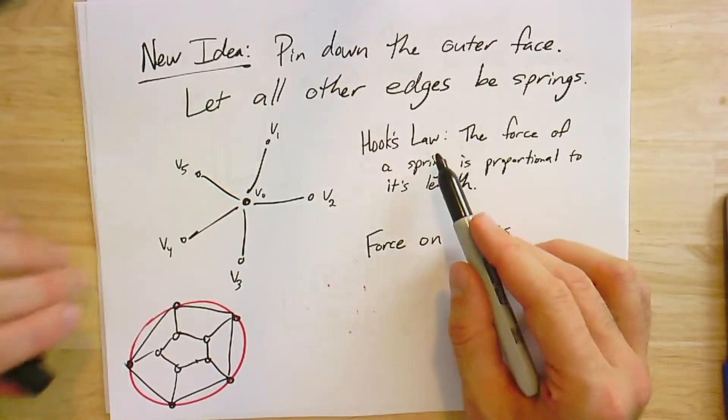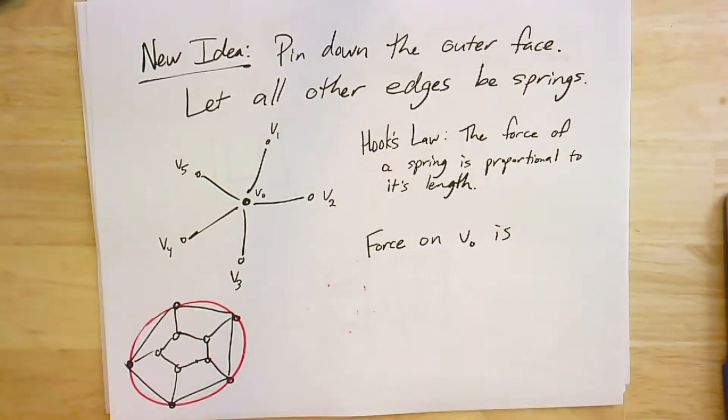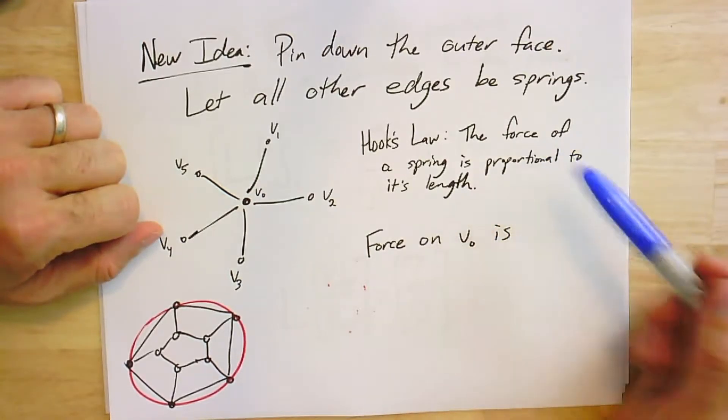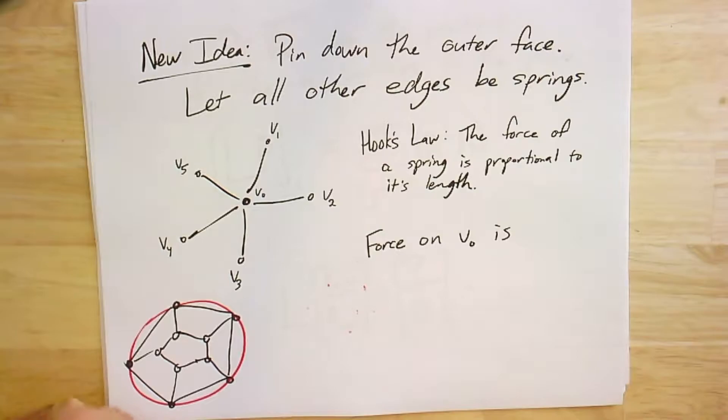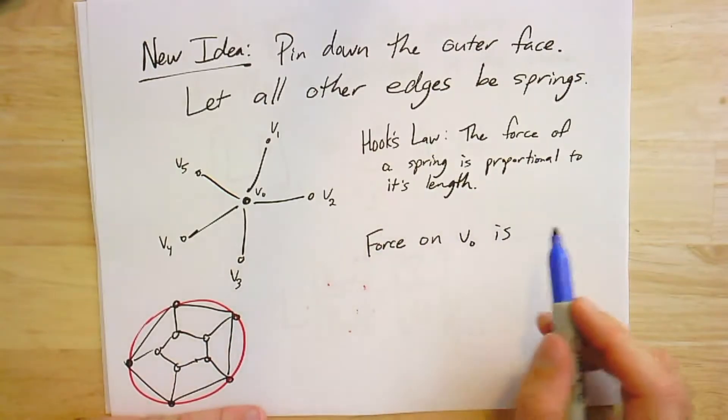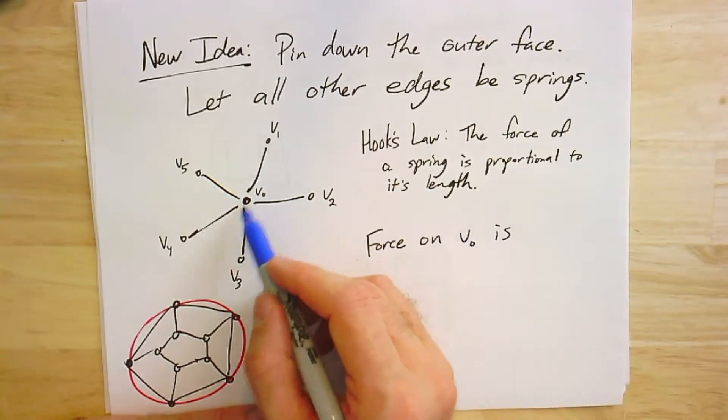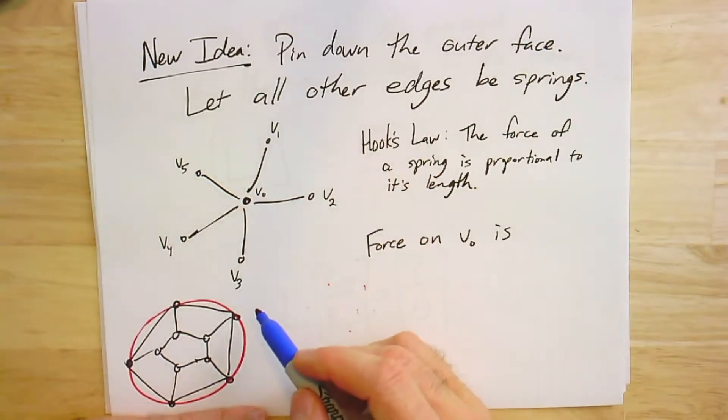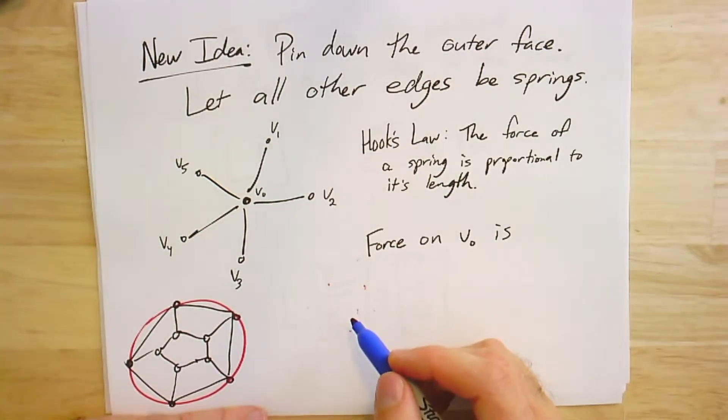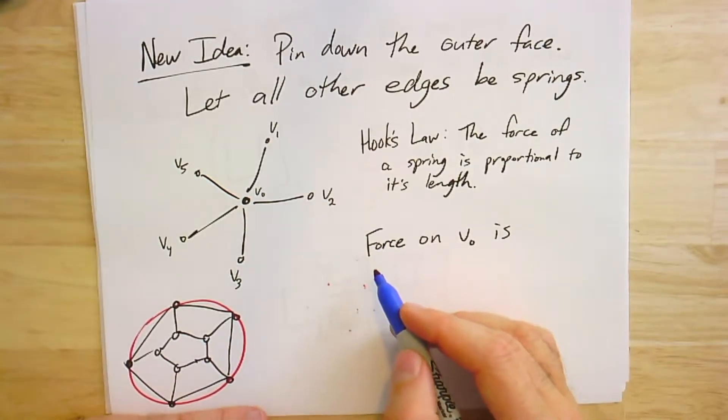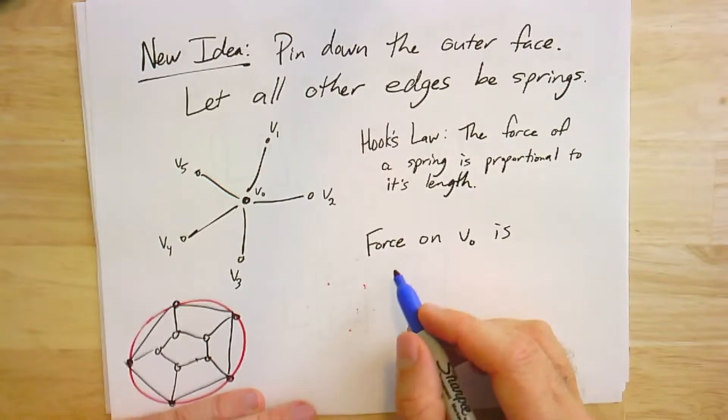Okay, so I decide that on this circle I'm going to put my outer face, and those are not going to move. All the other edges, so here's my outer face, all the other edges are springs, and I'll let them pull as much as they want and see where everything settles. Now, Hooke's Law, which describes how forces are exerted by springs, it says that the force of a spring is going to be proportional to its length. Force is equal to spring constant times the displacement, which is just the length here.